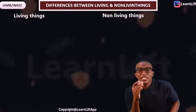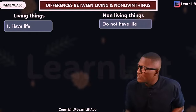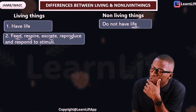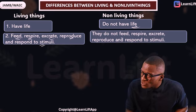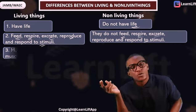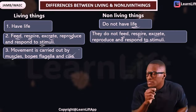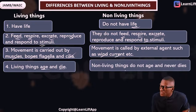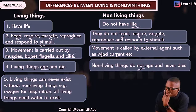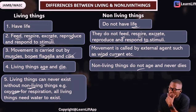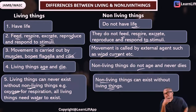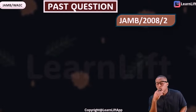What are the differences between living and non-living things? Living things have life; non-living things do not. Living things feed, respire, excrete, reproduce, and respond to stimuli. Non-living things do not feed, respire, excrete, or respond to stimuli. Movement in living things is carried out by muscles, bones, flagella, and cilia, while non-living things' movement is by external agents such as wind and water currents. Living things age and die; non-living things do not age and die. Living things cannot exist without non-living things — we need oxygen and water — but non-living things can exist without living things.